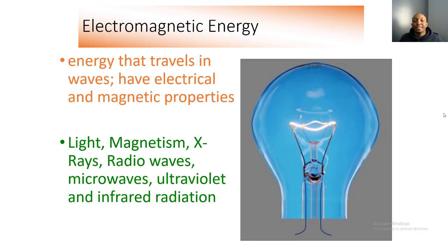Electromagnetic energy is energy that travels in waves and has both electrical and magnetic properties. Examples include light, magnetism, X-rays, radio waves, microwaves, ultraviolet, and infrared radiation. Each form carries a certain amount of energy — radio waves and microwaves don't carry a lot of energy, so they're not too harmful. But ultraviolet rays and X-rays carry a lot of energy and can alter or mutate DNA in our body.